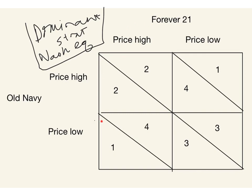Suppose Old Navy thinks Forever 21 is going to price high. Old Navy is thinking about that column: it could price high and get its second best outcome, or price low and get its first best outcome. In a rational self-interest model, Old Navy is just interested in Old Navy, so if it anticipates Forever 21 pricing high, Old Navy is going to price low. Now, what if Old Navy thought Forever 21 was going to price low? Old Navy could price high and get its worst outcome, or price low and get its second worst — which is better. So Old Navy is going to price low.